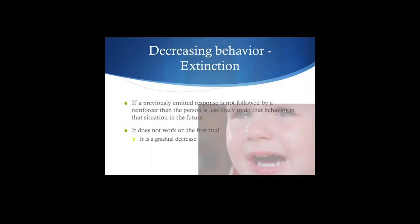It is a gradual decrease. The behavior is maintained at a fairly high rate, then we start extinction and the behavior goes down and keeps going down. Eventually the probability of that response will diminish to zero — though it never truly goes away one hundred percent.